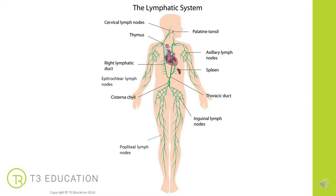Moving up the body from the thigh to the torso, we have the inguinal lymph nodes in the groin. Further up, we have the axillary lymph nodes under the armpits, and the cervical lymph nodes in the neck. Depending on where the fluid is, where the bruise is, and where we're trying to drain to — that tells us the best direction for our anchor, so that we get a recoil towards the appropriate lymph node.